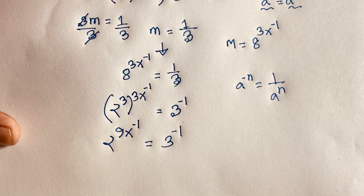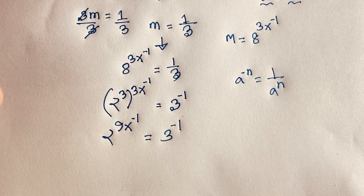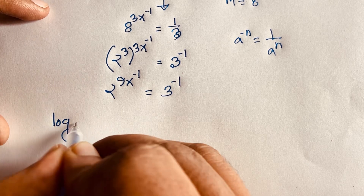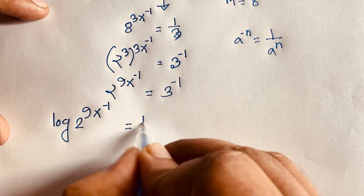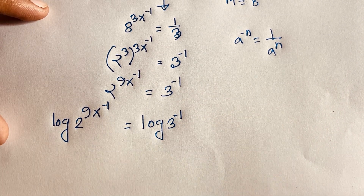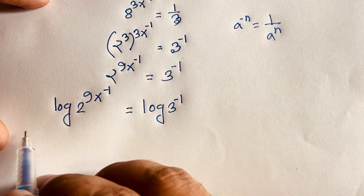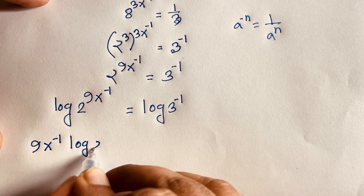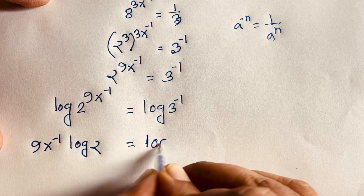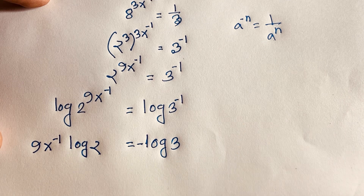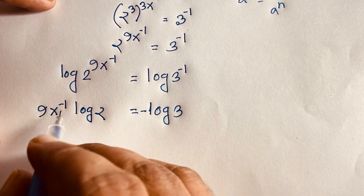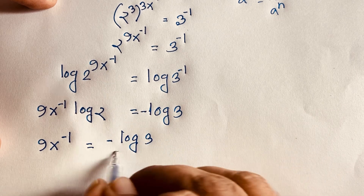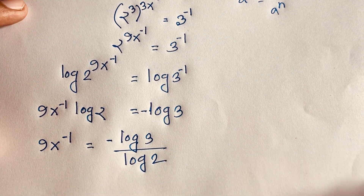Now to find the value of x in this exponential equation, I apply the natural log to both sides. So log of 2 to the power 9x minus 1 equals log of 3 to the power minus 1. Using the log power rule, the exponent moves in front: 9x minus 1 times log 2 equals minus log 3.